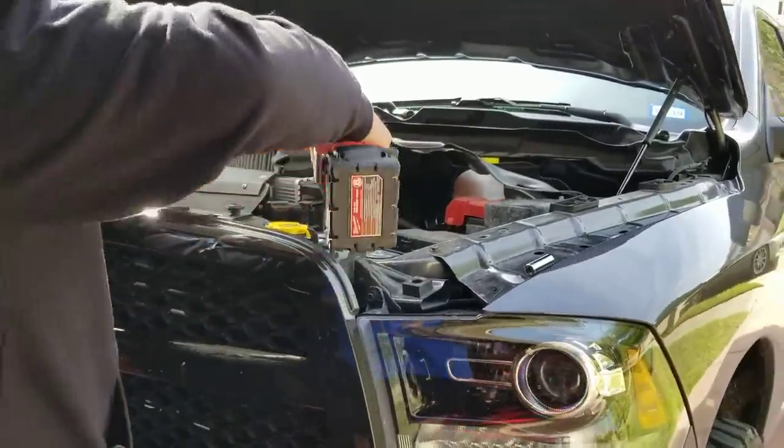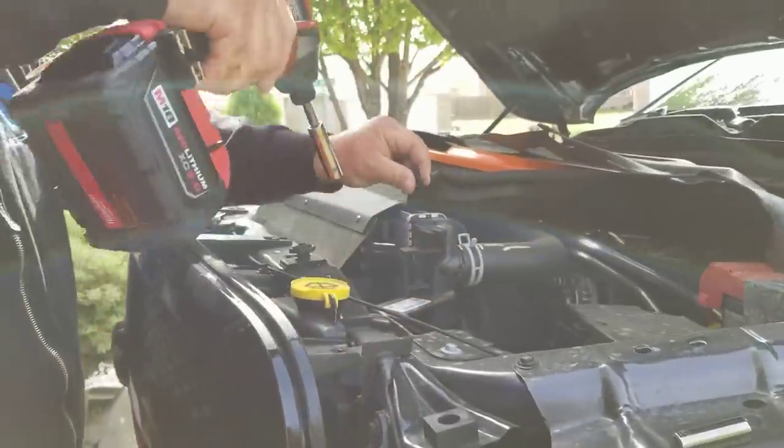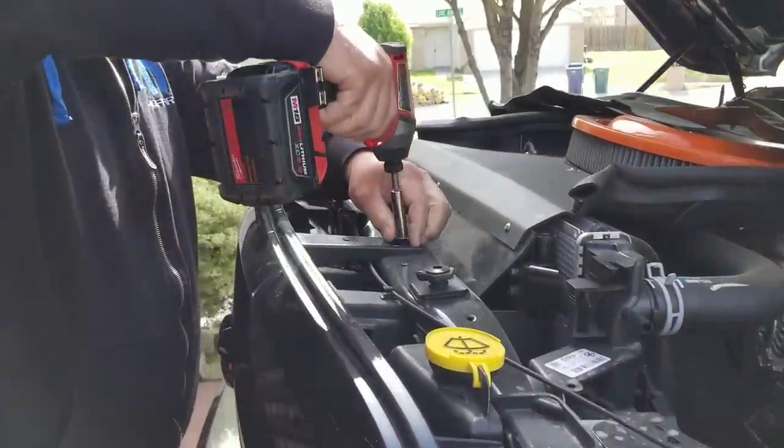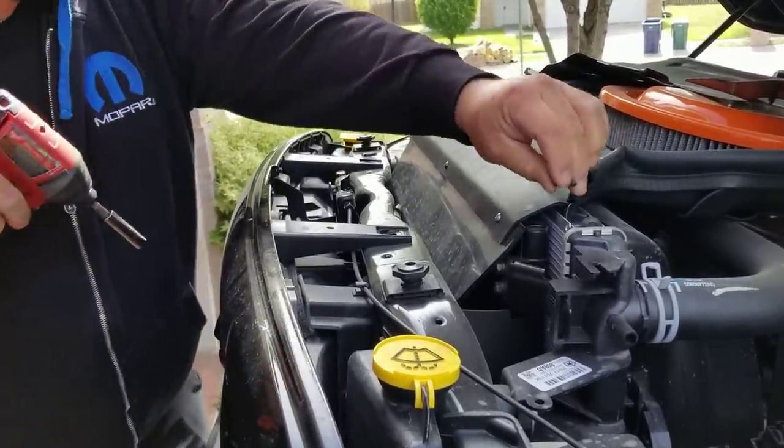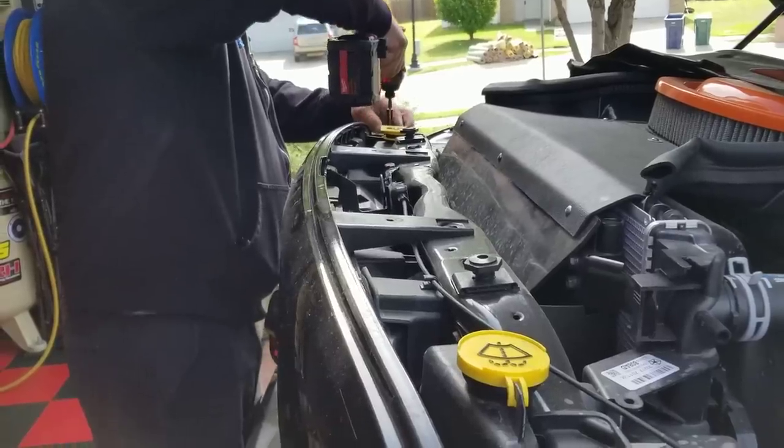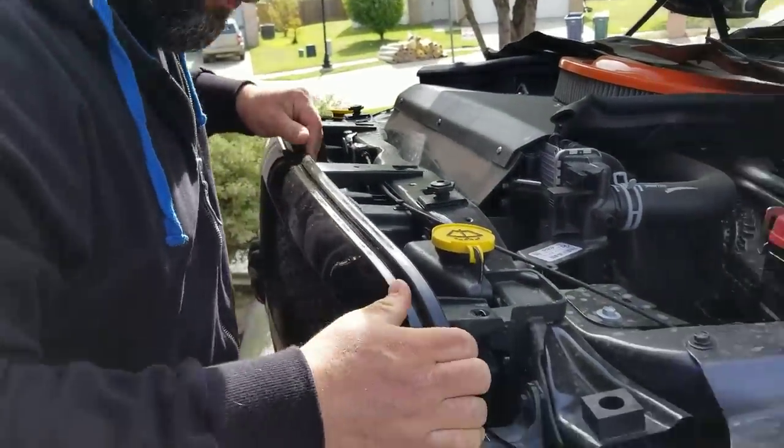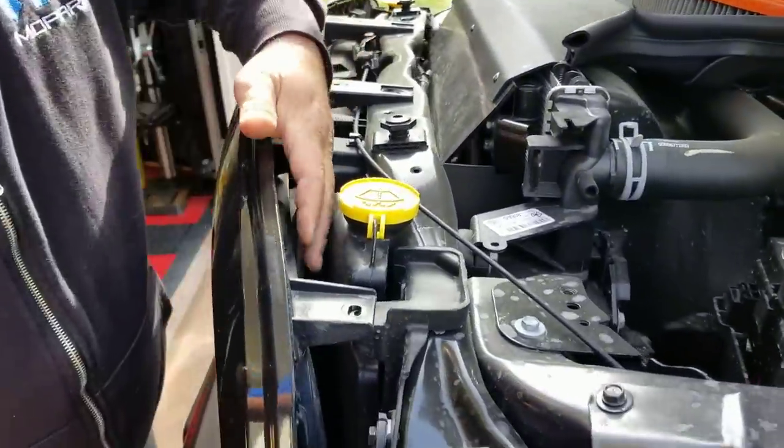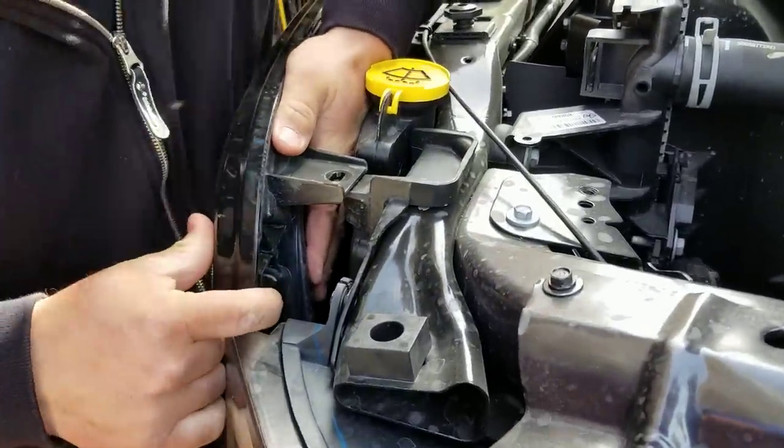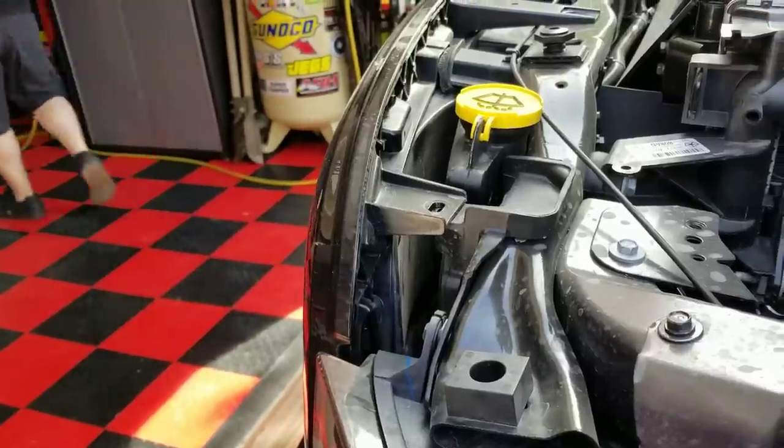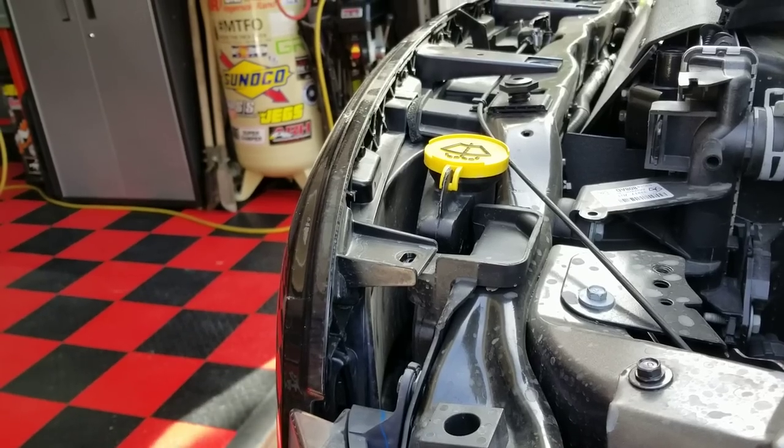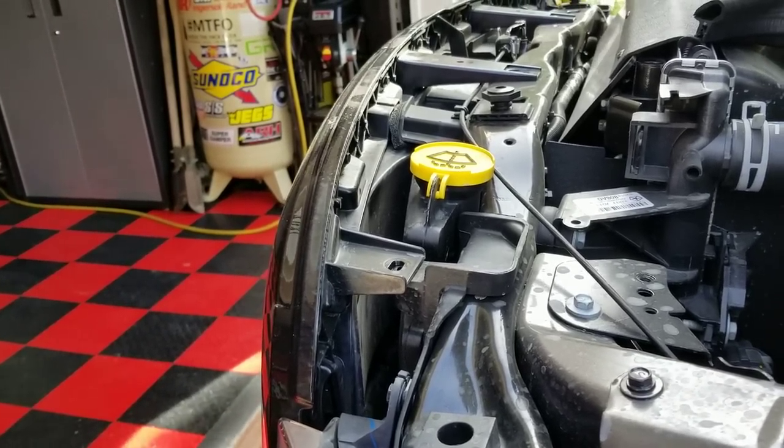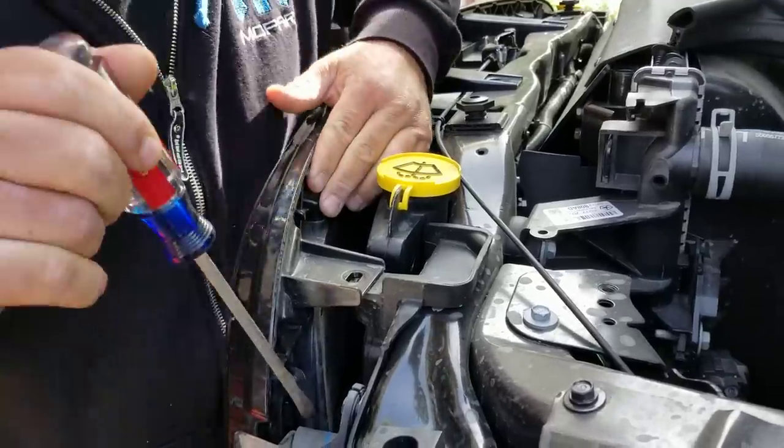We've got four 10mm bolts. Just pop the drill in. These grills have four tension retainers. You should be real careful when you're pulling them out. Use a flat head screwdriver so you don't break any tabs off.